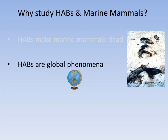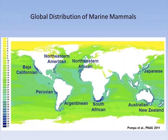Unfortunately, harmful algal bloom species are found on virtually every coastline — at least one species of microalgae that produces some sort of harmful toxin. These events happen all over the world, and so do marine mammals. A global map of marine mammal species richness shows that wherever you have high densities of marine mammals, those are also places with highly productive coastal areas — exactly where you find frequent, severe harmful algal blooms.